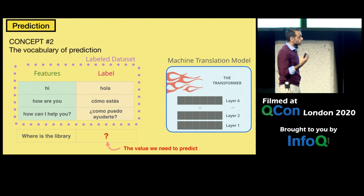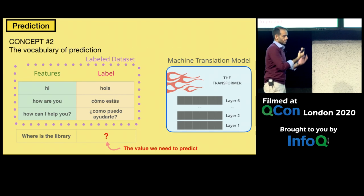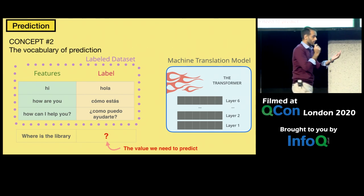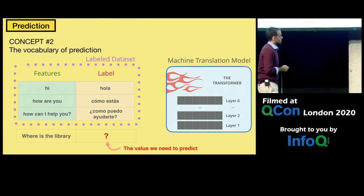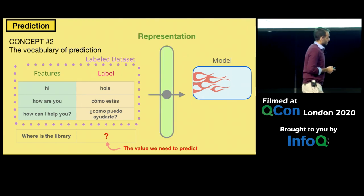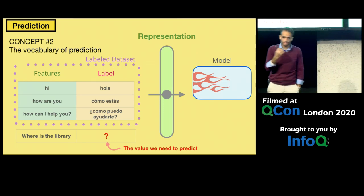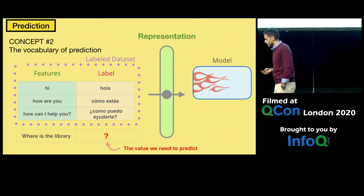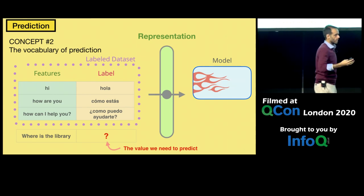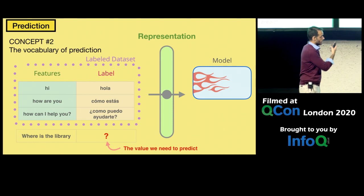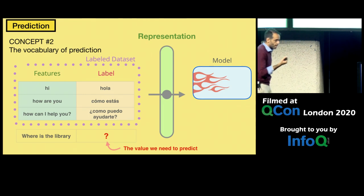We'll also talk about representation — how do you numerically represent words, sentences, or images? You need to do that if you're going to calculate predictions. At the end, you're multiplying weights by whatever inputs you get. That's the mechanism, if we're being very mechanical about what happens inside a neural network.